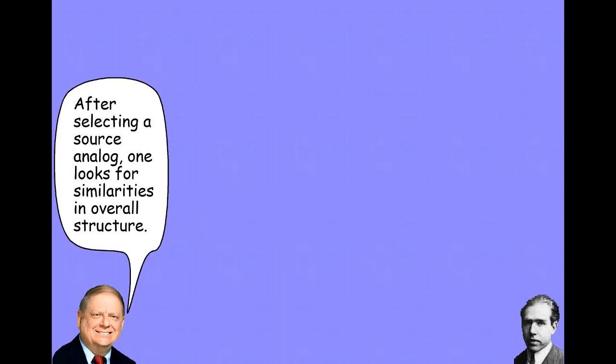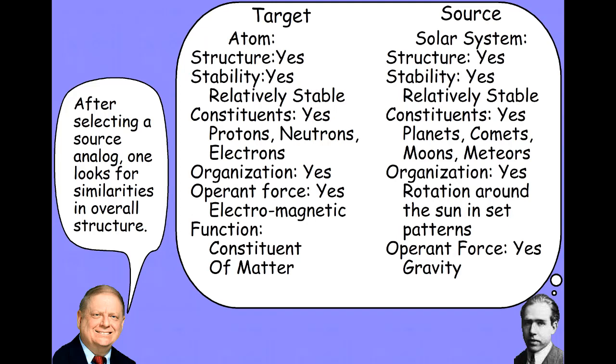After you select that source analog, then you're looking for similarities in structure. And so, you look at the atom. You go, okay, the atom has a structure, so does a solar system. That structure is relatively stable, so is a solar system structure. It has constituents, just like the solar system. In the case of the atom, we've got protons, neutrons, and electrons. In the case of the solar system, we've got planets, comets, moons, and meteors. They're organized. There's an operant force that enforces that organization. In the case of our atom, we know that it's the electromagnetic force. In the case of the solar system, we know that it's gravity. So, we see a whole bunch of similarities here.